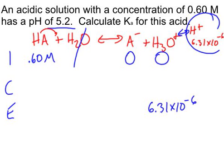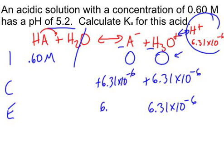Which means that it must have gone up by 6.31 times 10 to the negative 6, because it was 0 to begin with. And since this is a 1 to 1 ratio, this also must have gone up by the same amount, meaning that the A- concentration is also 6.31 times 10 to the minus 6.